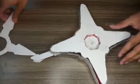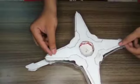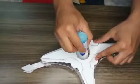Now finally glue all the three parts. Now take a bottle and cut its top part which has thread and paste it at the center of the ninja star.